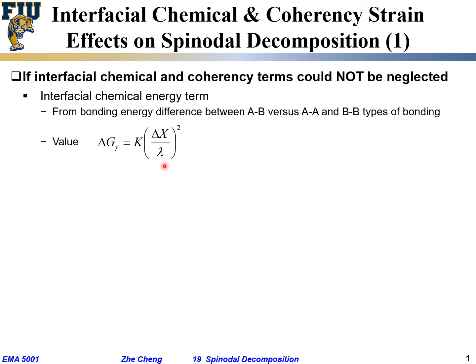For simplicity, the interfacial chemical energy can be approximated as k times the square of the composition difference divided by lambda, which is the wavelength between neighboring composition fluctuations. This gamma term represents the interfacial energy due to chemical difference, and it is related to the composition fluctuation delta x as well as the separation between neighboring regions with different composition. The larger the composition difference, the larger this chemical energy term.